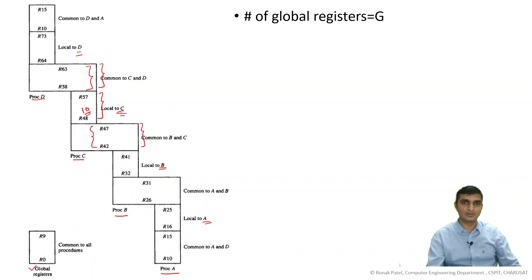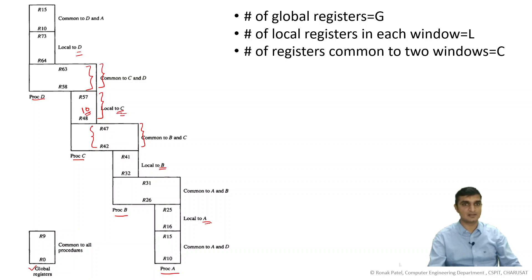So number of global registers is indicated by G, number of local registers in each window is L, number of registers common to two windows is C, and number of windows is W.